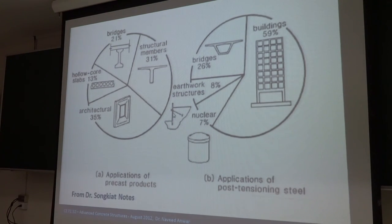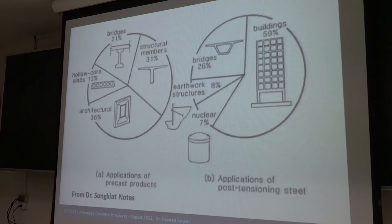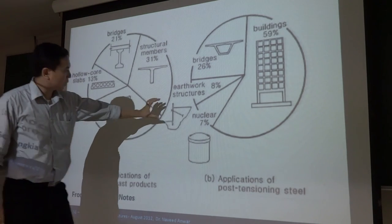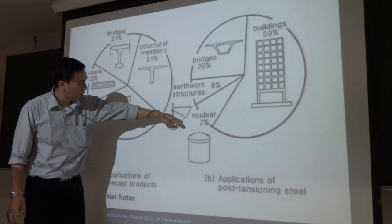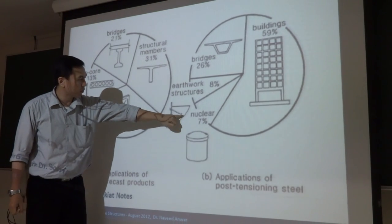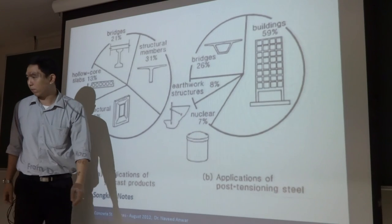For retaining structures — if the retaining wall is very tall, maybe 10–15 meters, we have to provide the spine and carry it by post-tensioning with the tendons.